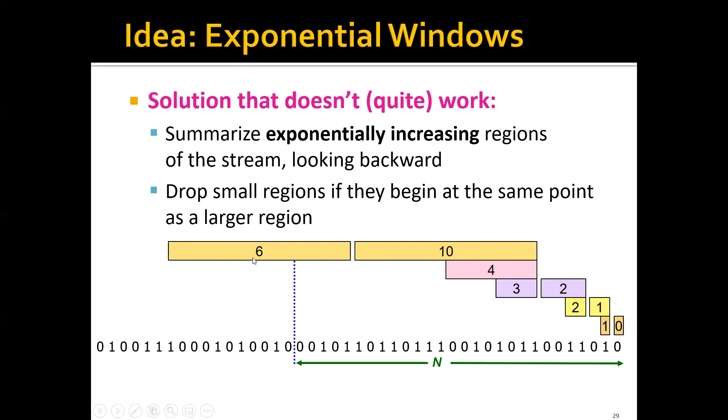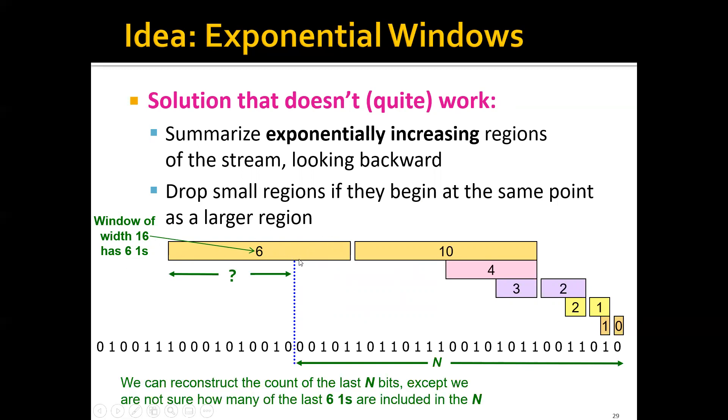The last window here is tricky because we only have part of the window that's involved in this last N bits. We know that this window of width 16 has 6 ones, but we actually don't know exactly how these 6 ones are distributed in this window. We can reconstruct the count of the last N bits, except that we are not quite sure how many of the last 6 ones are included in the N bits.